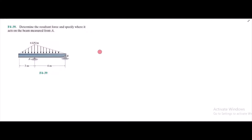Hi, welcome to the solutions manual. This is fundamental problem 4-39 from RC Hibbeler Engineering Statics 12th edition. According to this problem, you have to determine the resultant force and specify where it acts on the beam measured from A.